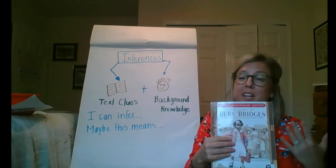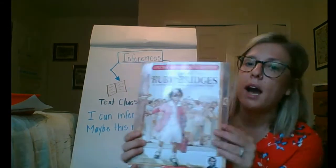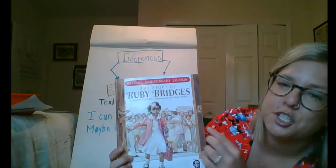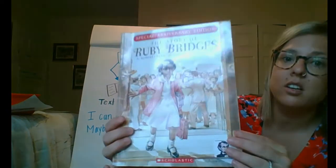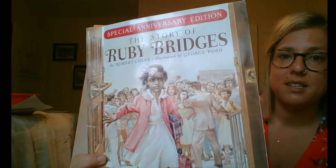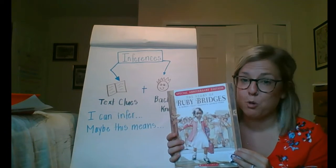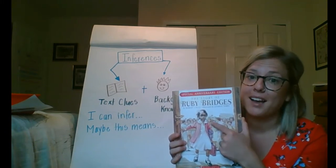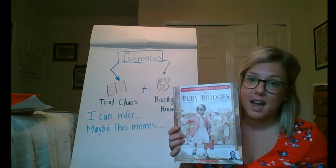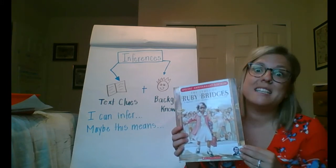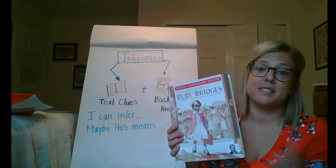Now that you've had time to think about it, I'm going to share with you an inference that I made. Now, I know I've already read this book, but you can even make inferences when you haven't read a book before. I see Ruby's face here, and she looks determined. She looks like she has courage on her face. And I look at the people in the background, and they look angry. I also notice that all the people in the background were white, and Ruby is black. This makes me think that it happened a long time ago. So, it didn't happen yesterday.